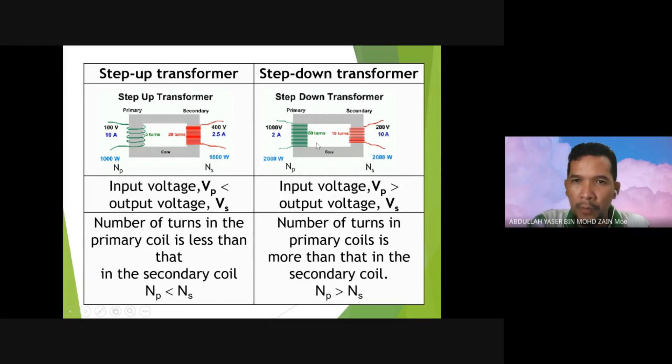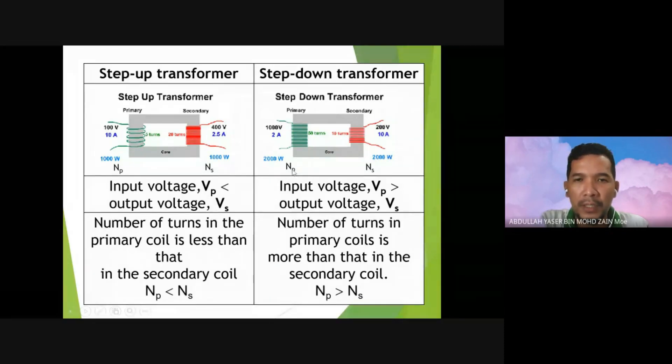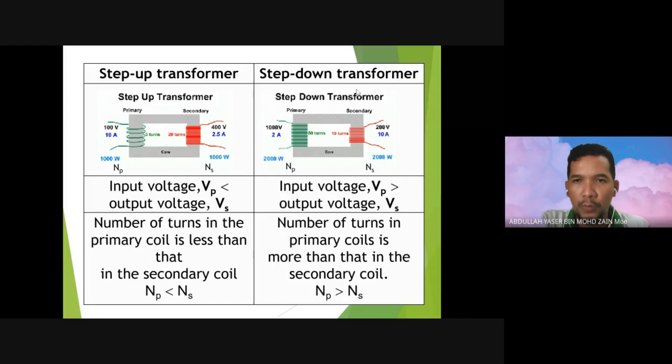For step-down transformers, you can see here NP has 50 turns for primary and for secondary only 10 turns. Because the number of turns in primary is larger than the number of turns in secondary, the input voltage will have larger voltage compared to the output voltage. We have here 1000 volts input and the output will become less, become 200 volts.